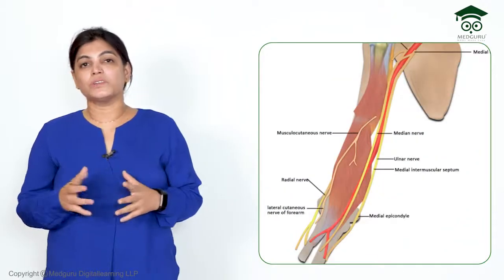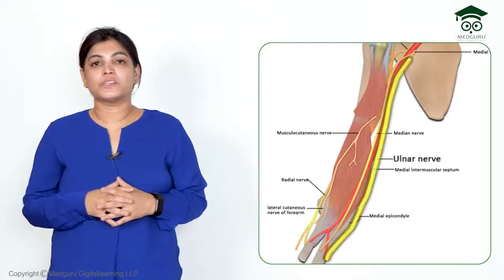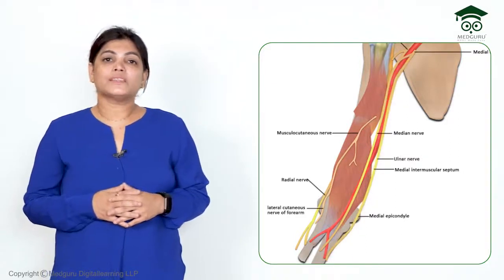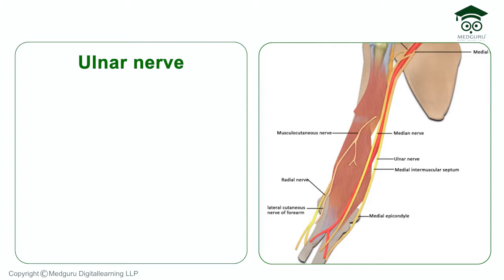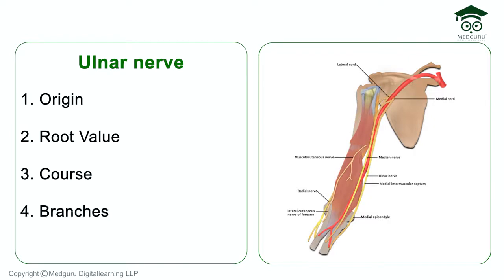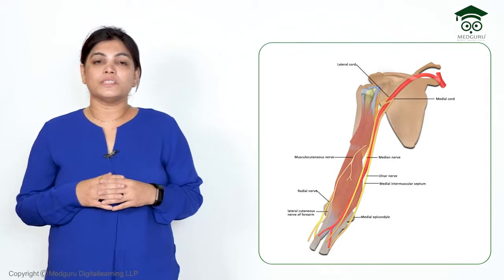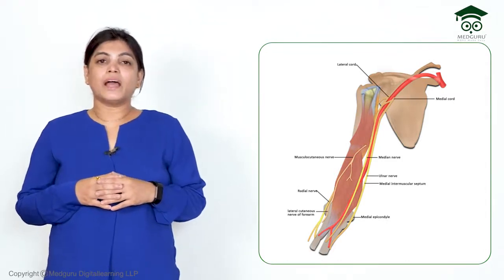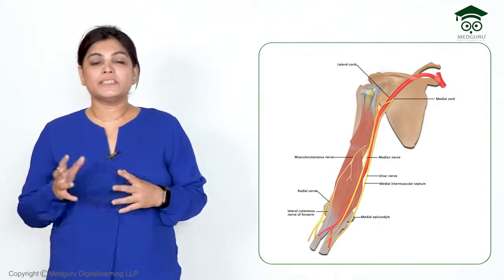In this section of upper limb, I am going to describe the ulnar nerve. It is one of the most important nerves, often asked as a theory examination question and also asked in the viva examination. I will describe the ulnar nerve under the following sub-headings: origin, root value, course, and branches of the ulnar nerve.